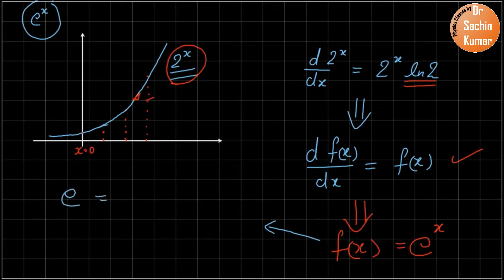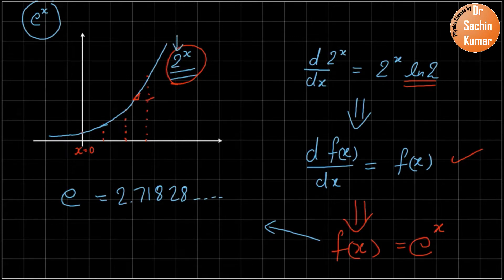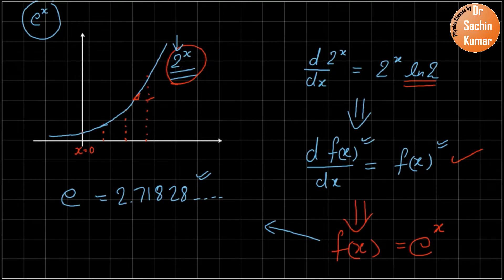So what is e? E is just an irrational number whose value is 2.71828 and so on. Just the same way we chose the value 2, if we choose this special value e, it shows the property that its differentiation is equal to the same function. E is just a number, and if we define growth using this number it follows this special trend.